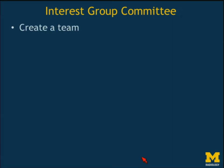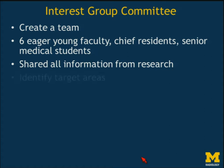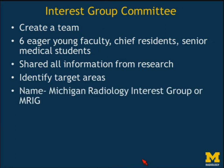I first set out to build a group committee because I knew I could not do this alone. I created a strong team of six eager young faculty with a lot of ideas, included the chief residents and senior medical students who were going to be the future presidents of the interest group. I shared all the information from my research with them and we identified different target areas. We came up with the original name: Michigan Radiology Interest Group, or MRIG — we call them the MRIGs.